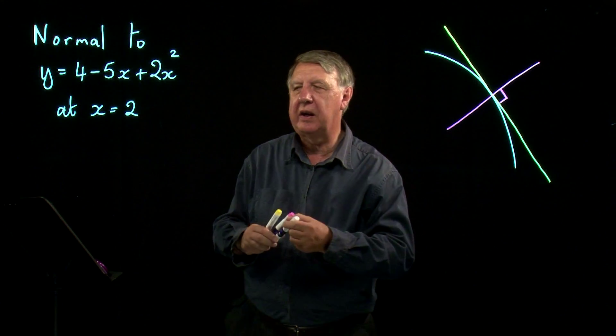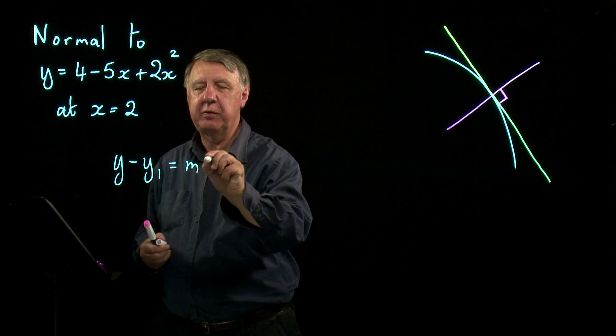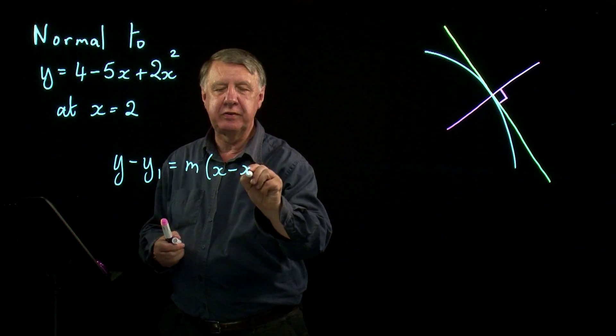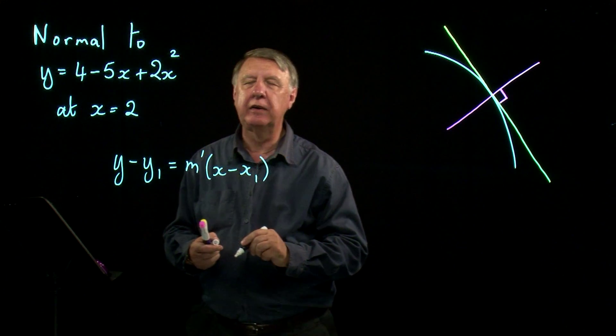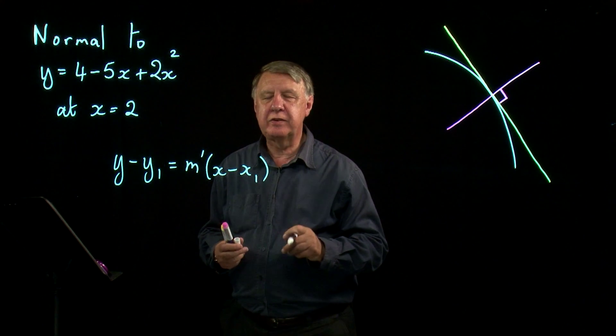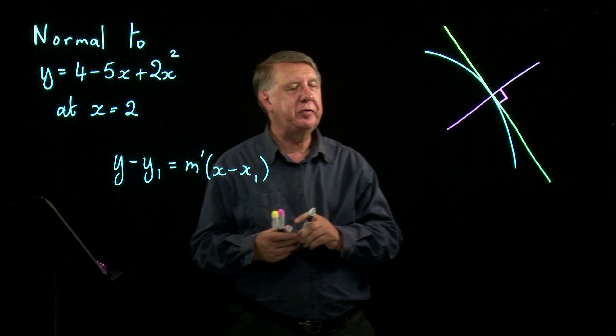And eventually we're going to end up using our old friend y minus y1 equals m x minus x1. And I'm going to slip a dash in there just to indicate that it's a normal and not a tangent.